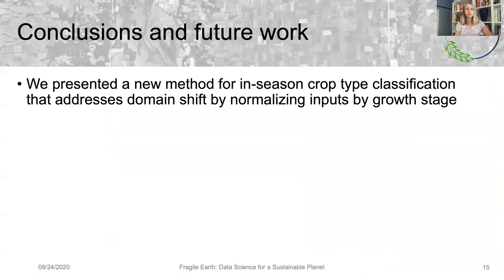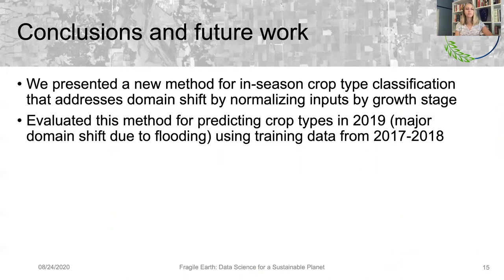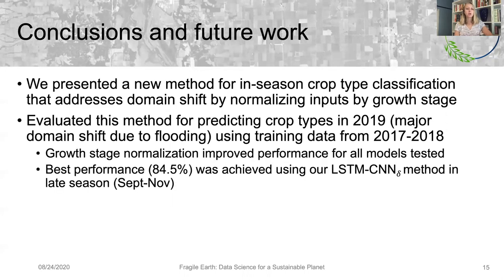In conclusion, we presented a method for in-season crop type classification that addresses domain shift by normalizing inputs by their growth stage. We evaluated this method for predicting crop types in 2019, which saw a major domain shift due to flooding, using training data from 2017 and 2018. We found that growth stage normalization improved performance for all the models we tested, and that the best performance of 84.5% was achieved using our LSTM CNN Delta method in the late season, around September to November during harvesting.